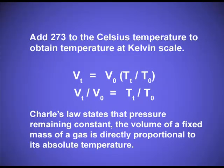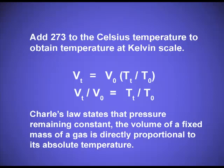Add 273 to the Celsius temperature to obtain the temperature in Kelvin. Charles' Law states that pressure remaining constant, the volume of a fixed mass of a gas is directly proportional to its absolute temperature. This is the graph between temperature and volume, keeping pressure constant. The straight lines show that when temperature is increasing, volume is also increasing. This graph is also known as an isobar, because we are keeping the pressure constant.